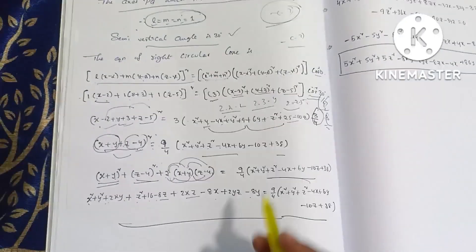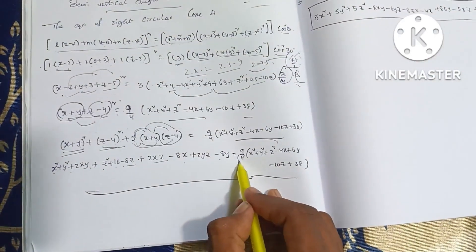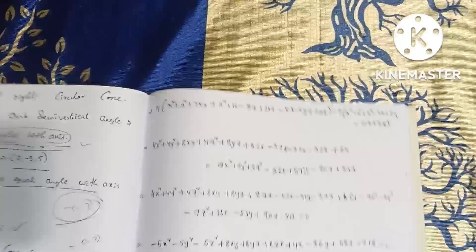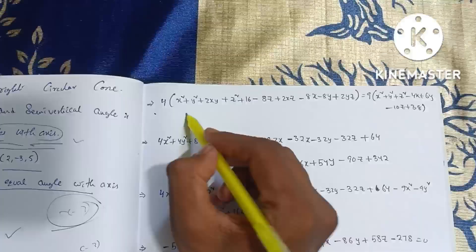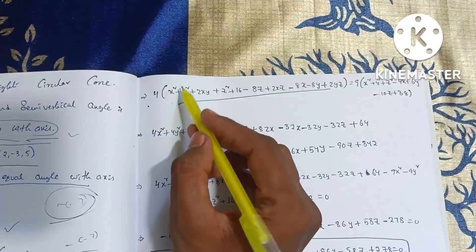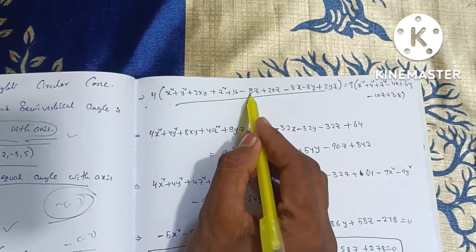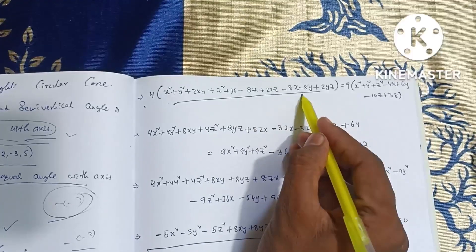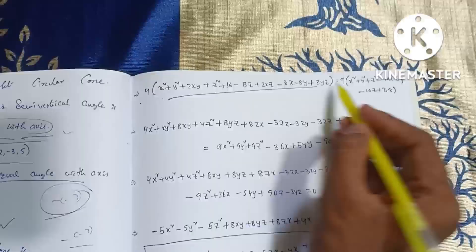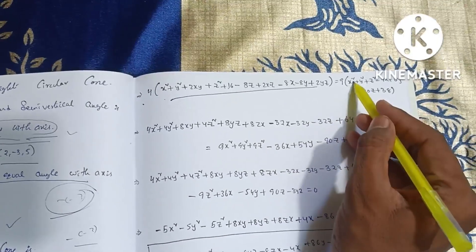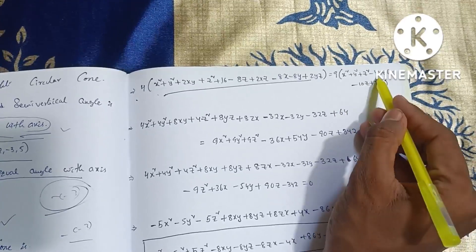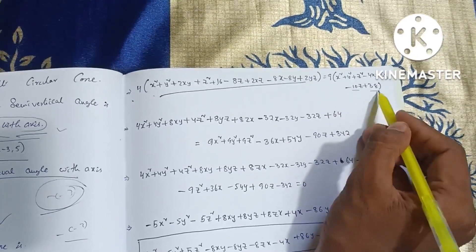So a simple question is equal to 4 into x square. So 4 into x square plus y square plus z square plus 2xy plus 16 minus 8z plus 2xz minus 8x minus 8y plus 2yz is equal to 9 into x square plus y square plus z square minus 4x plus 6y minus 10z plus 38.